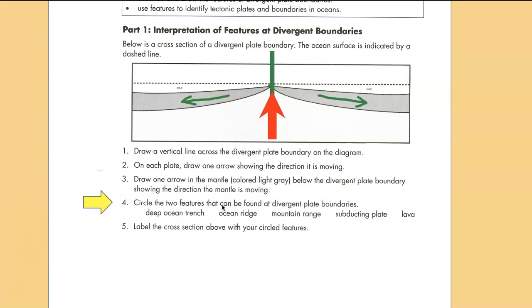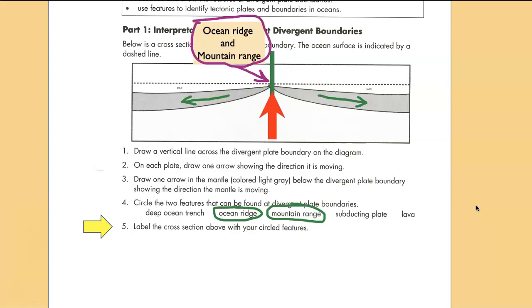Circle the two features that can be found at a divergent plate boundary. Well there's an ocean ridge and that's a mountain range. There's also lava, so I'm not really sure why they added this additional thing, but we're not going to worry about lava. Where are these things? Well they are together. They're at the same place right where the divergent zone is located.